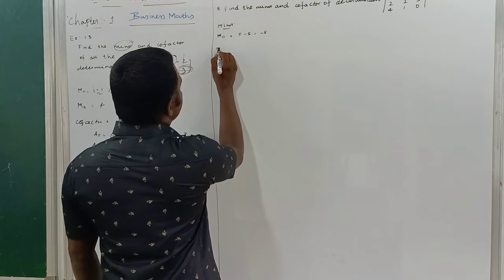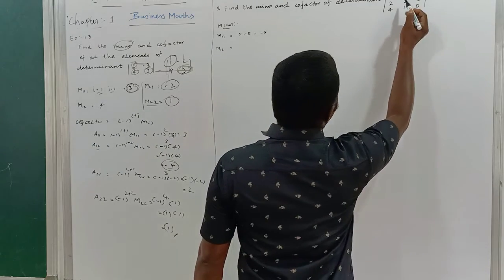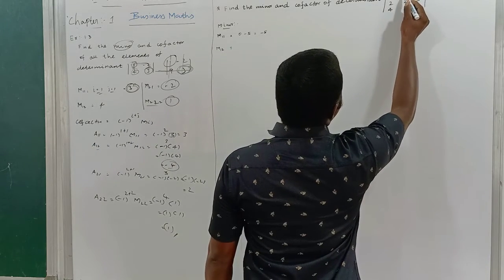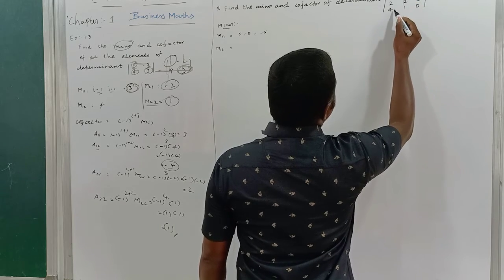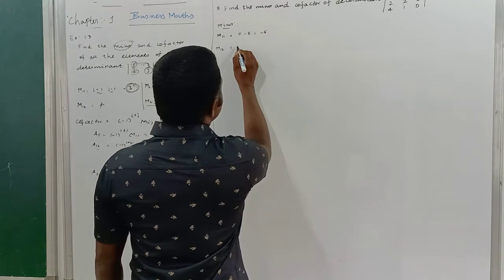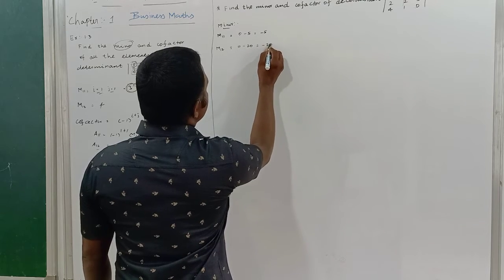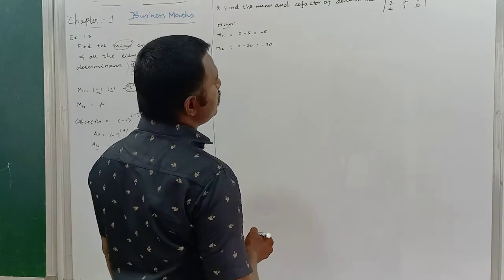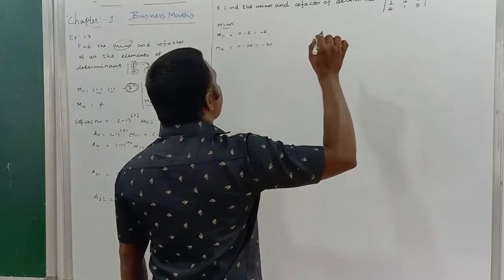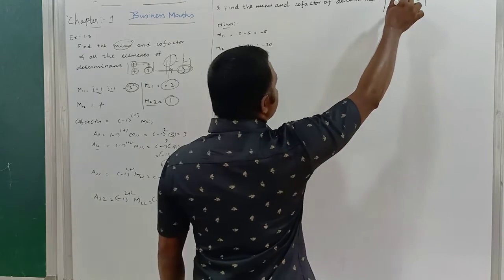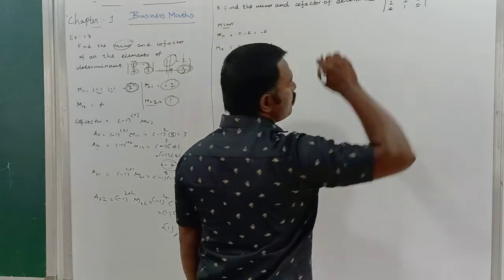Minor M12: first row, second column — element 1. I remove that row and column, leaving 0 and minus 20. So M12 = minus 20, which is the minor of element 1 at position (1,2).